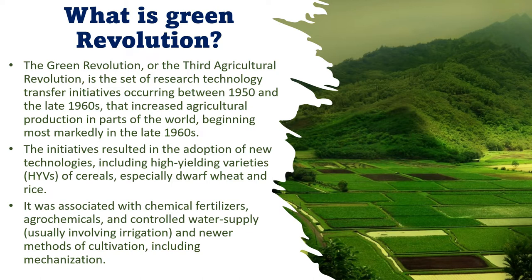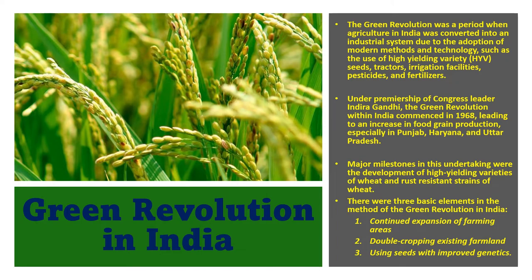When we talk about the green revolution in India, it was a period when Indian agriculture was transformed through the adoption of modern methods and technology such as high-yielding variety seeds, tractors, irrigation facilities, pesticides, and fertilizers. Under the premiership of Congress leader Indira Gandhi, the green revolution commenced in 1968.